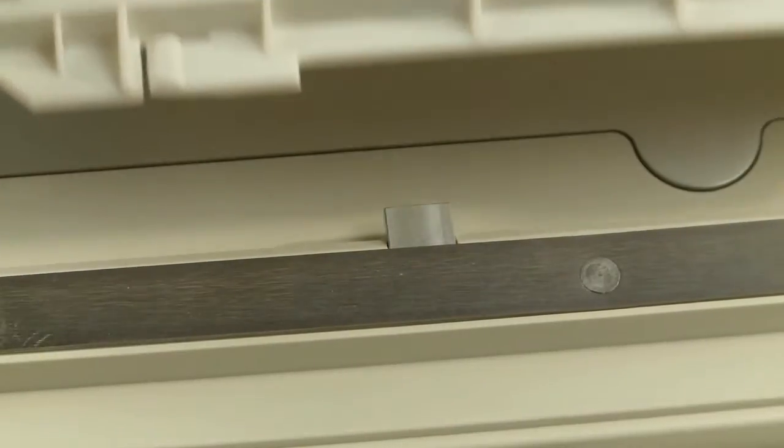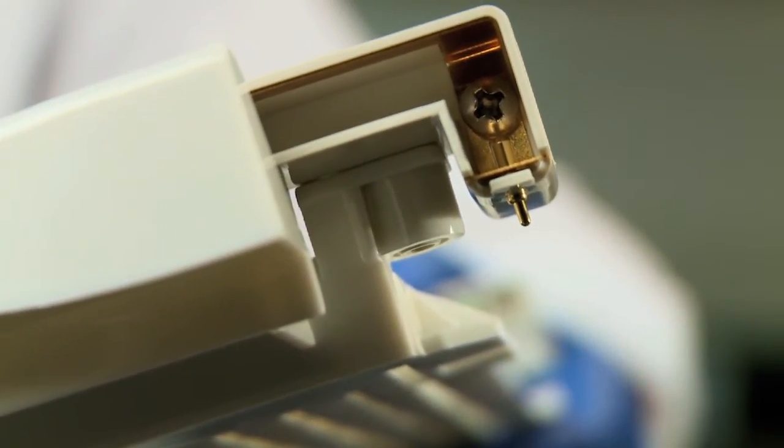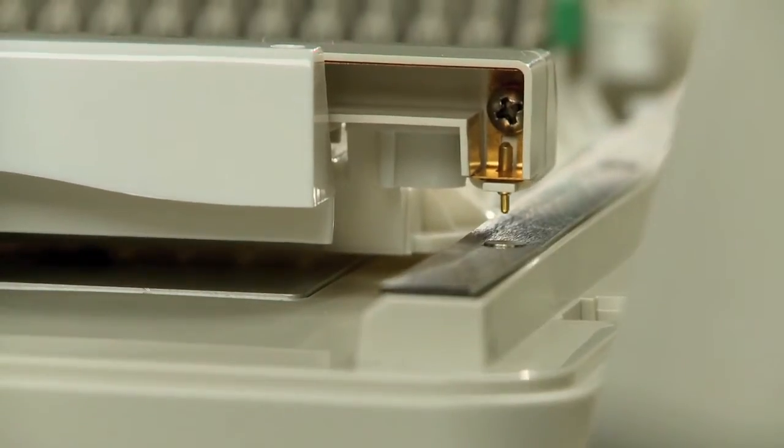Press the tray into the instrument until the stop on the tray is reached. Check to make sure that the pin on the negative electrode assembly has made contact with the metal strip on the instrument.